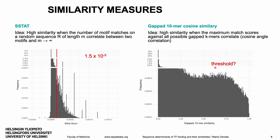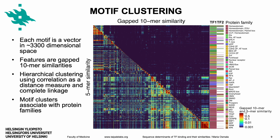In motif clustering, each motif is considered as a 3,000-dimensional vector where the vector elements are capped k-mer similarities. The motifs are clustered to reveal groups of motifs with distinct sequence specificities, and the groups are associated with protein families. Notably, the capped 10-mer similarity distinguishes monomeric and heterodimeric motifs from each other better than the uncapped 5-mer similarity.